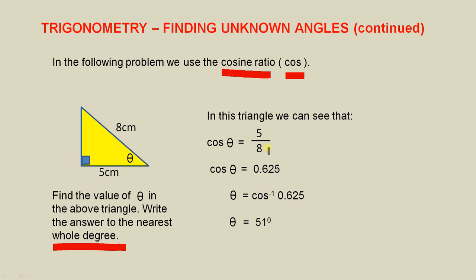So cos theta is 5 over 8. Cos theta is 0.625. So theta is the inverse cos of 0.625. And that gives you 51 degrees to the nearest whole degree.